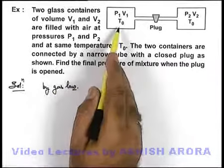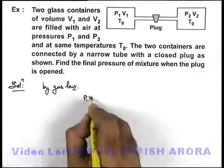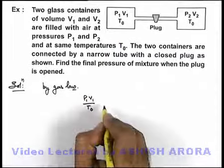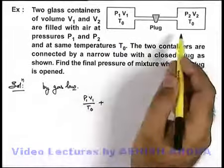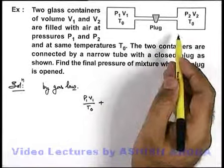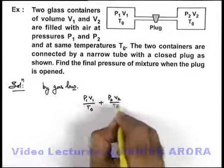The initial number of moles in the first gas can be written as P1 V1 by T naught, plus the initial number of moles in the second gas would be P2 V2 by T naught.